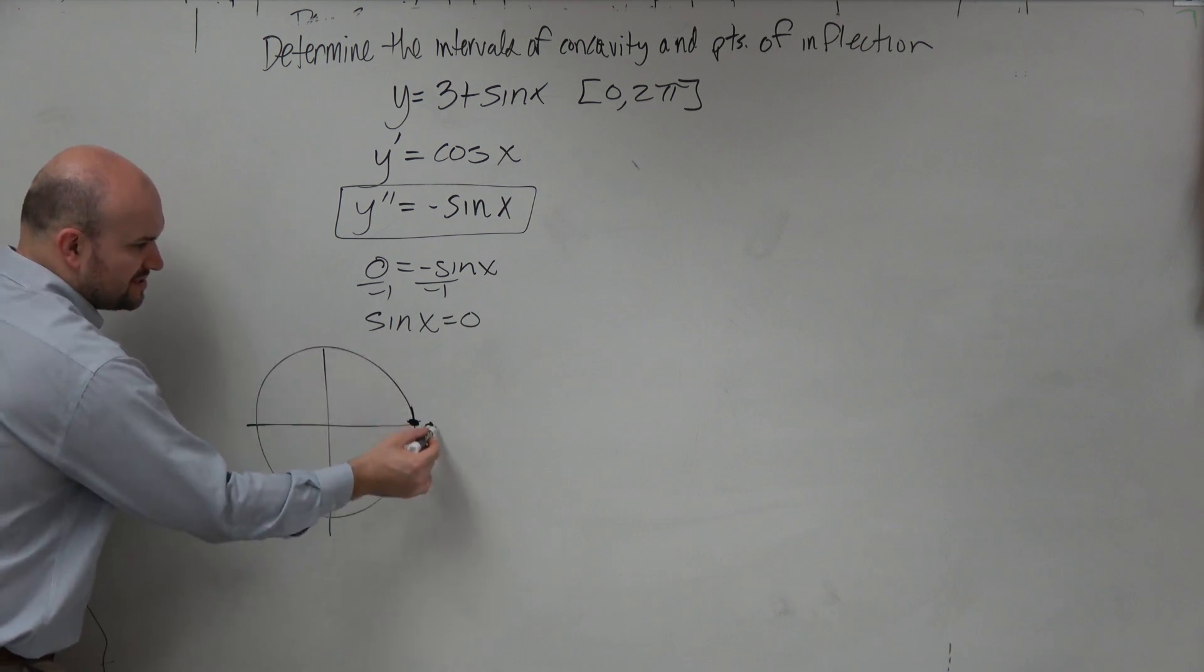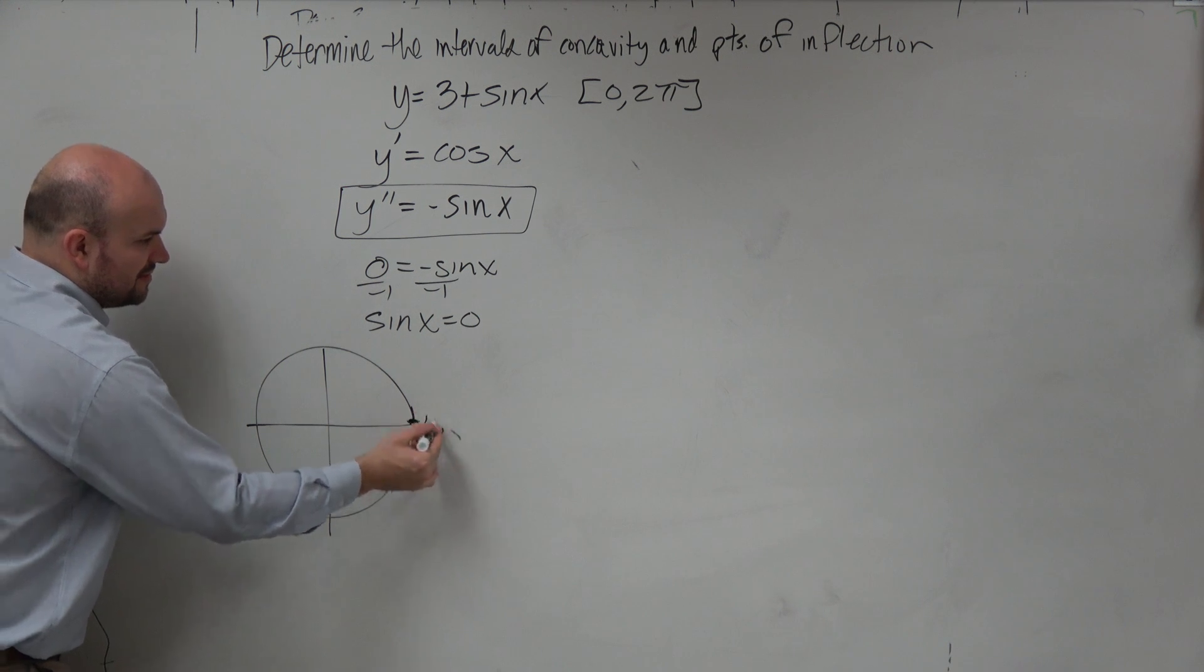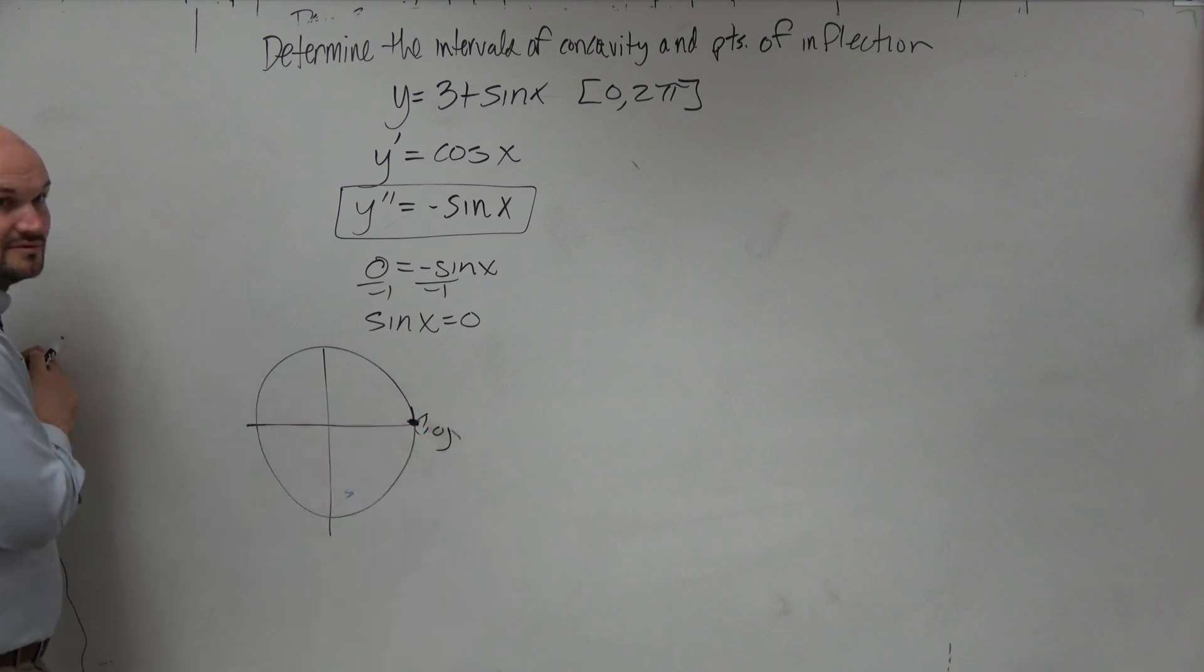We know here's a point, which is 1 comma 0, right? Now, where else? 1 comma 0.